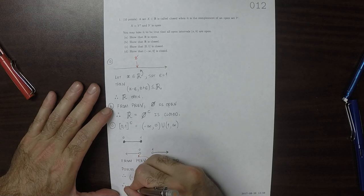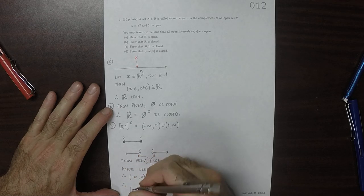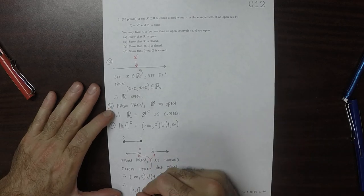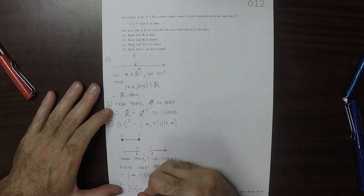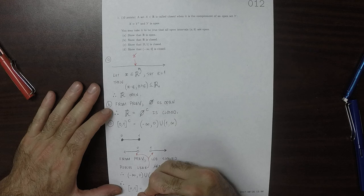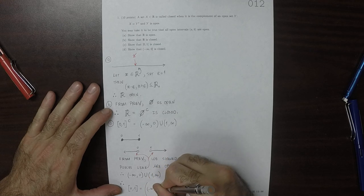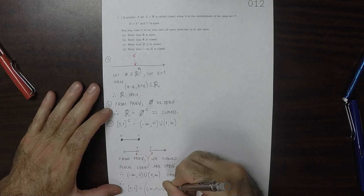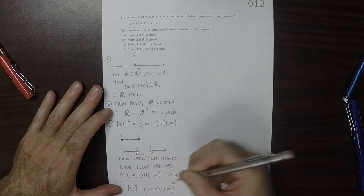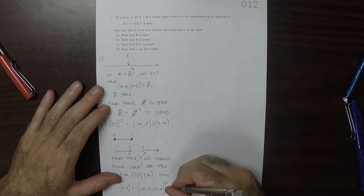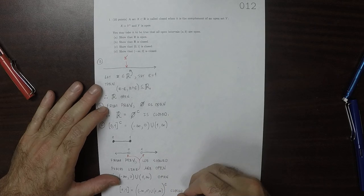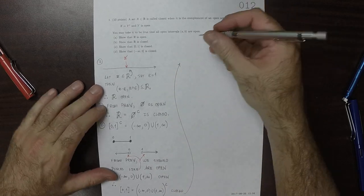And, therefore, 0 to 1, which is the complement of all of that. So, negative infinity to 0, union, 1 to infinity, complement, is closed. So, that's C.